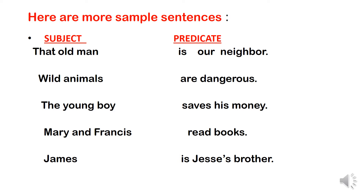In the sentence 'James is Jaycee's brother,' James is our subject — the one being talked about — and is Jaycee's brother is our predicate. To identify in every sentence what is the subject and the predicate, remember that the subject is the one spoken of, or the one talked about, whereas the predicate tells about what the subject does.